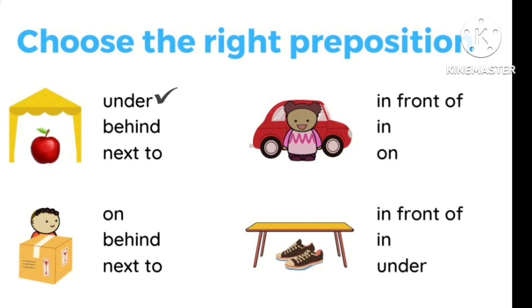Next dekhen ghe — ek boy khada hai box ke peeche. Peeche ko hum kya bolte hai — 'behind', right? Next dekhen ghe — jo girl hai, wo kahan hai? 'In' toh nahi hai — 'in' matlab andar. 'On' matlab upar, upar bhi nahi hai. So right option is 'in front of' — kahan hai? In front of.